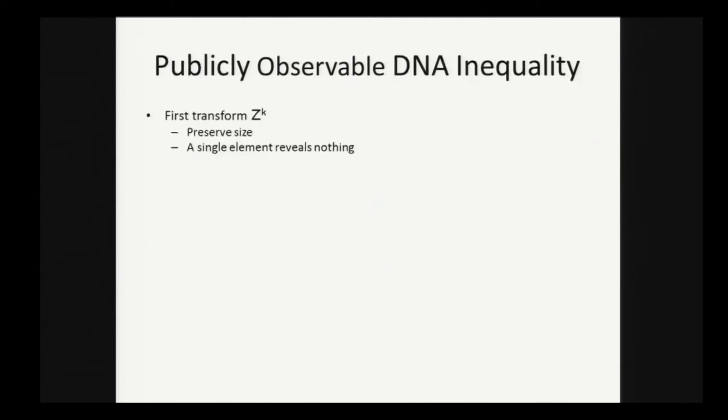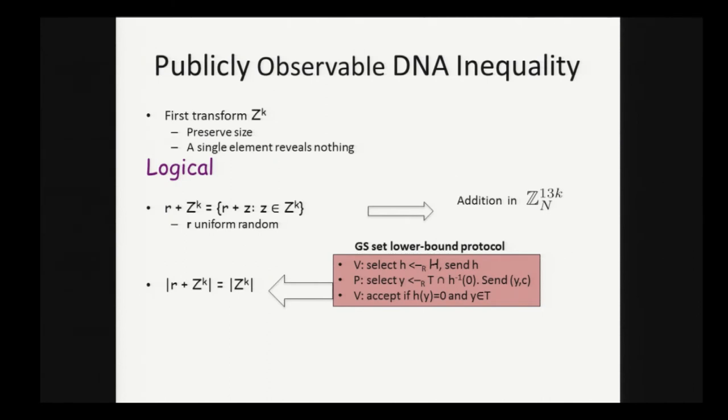We're going to first transform the set z to the k in a way that preserves its size, and such that revealing a single element gives no information. First I'll tell you logically what we're going to produce. It's very simple. We just take a uniform random vector and add it to everything in z to the k. If we're able to do this, the size of the set is preserved. We can apply the Goldwasser-Sipser set lower bound protocol to the set r plus z to the k. The second step, we can perform, pick and select y from this set, because a single element from r plus z to the k is completely random in z to the 13k, and so this would be simulatable.